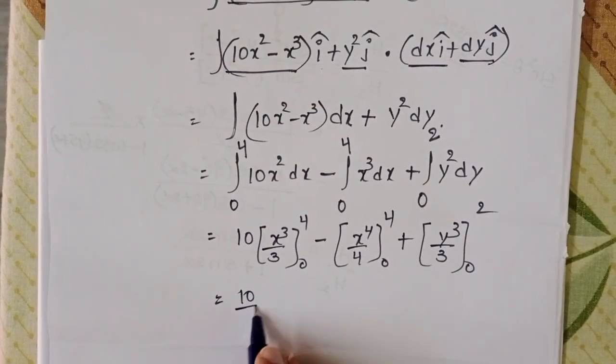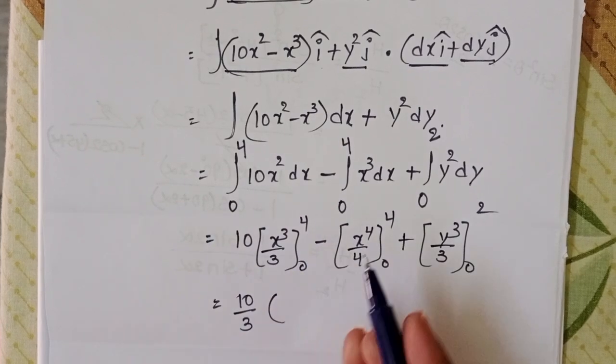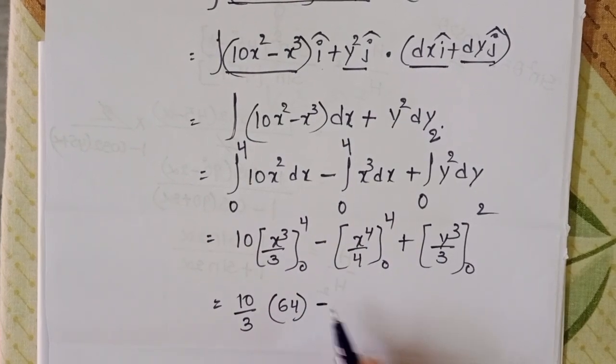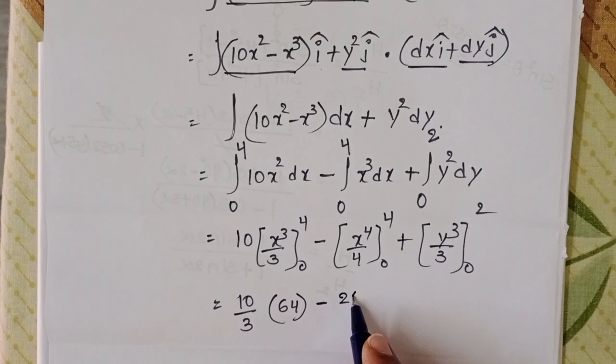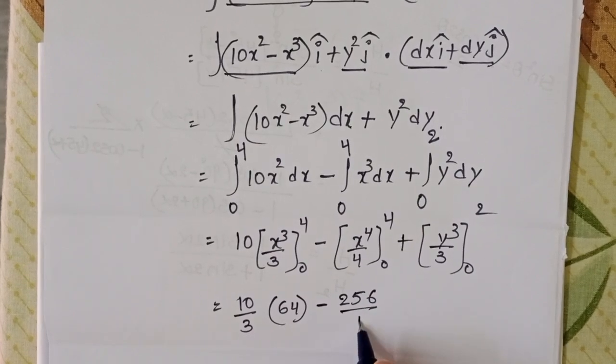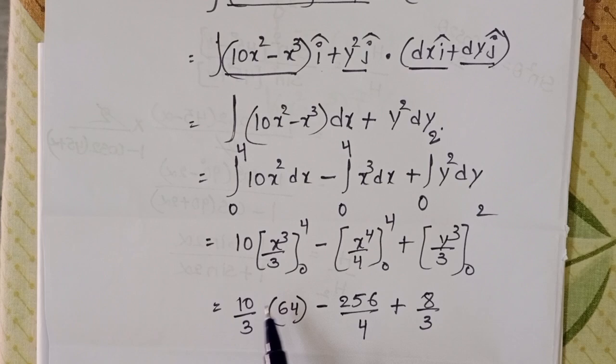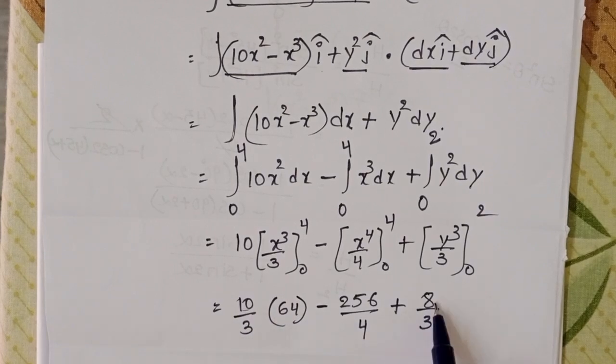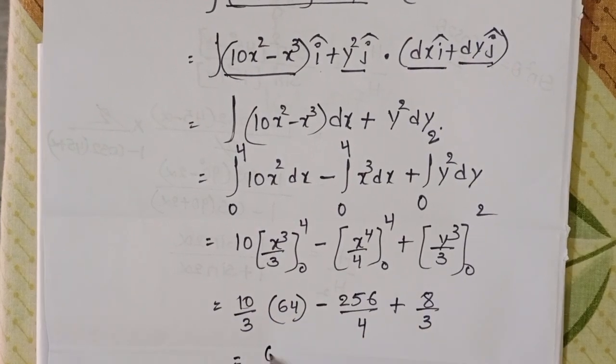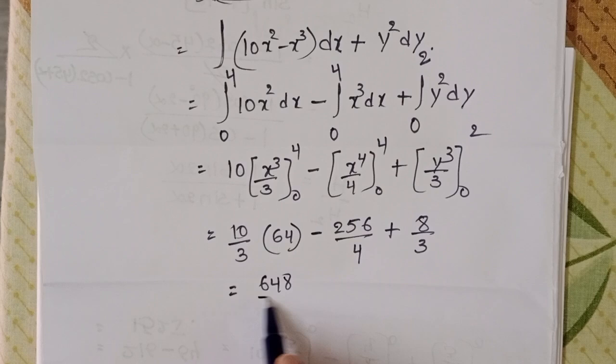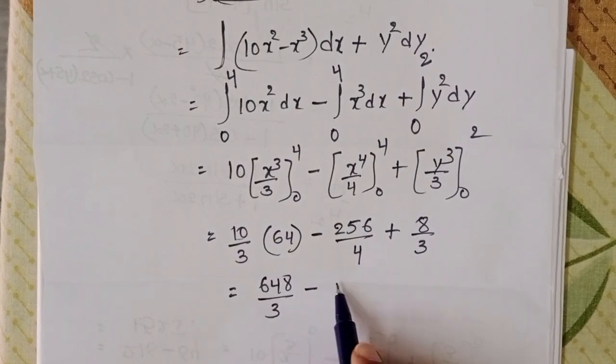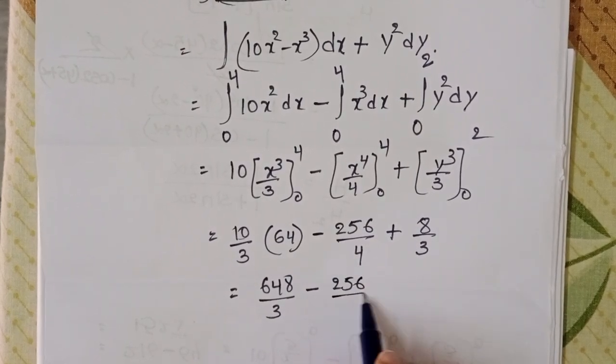10/3 times 4³ which is 64, minus 4⁴ which is 256 over 4, plus 8/3. This gives 640/3 plus 8/3 equals 648/3 minus 256/4.